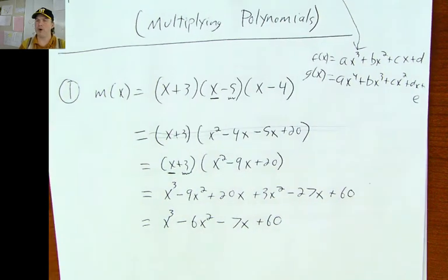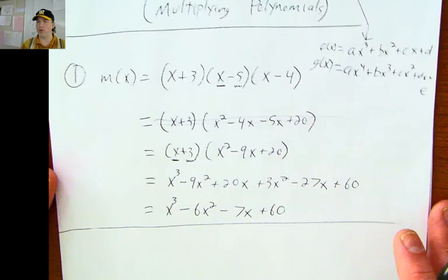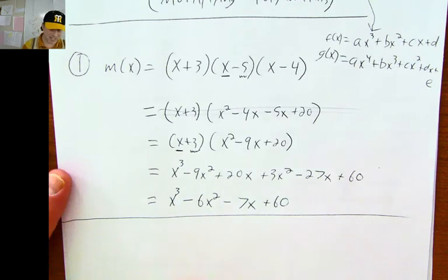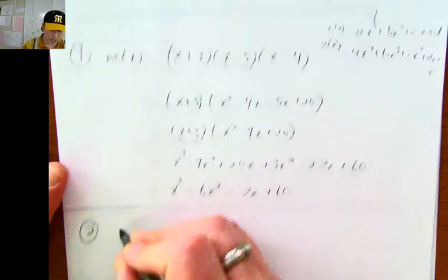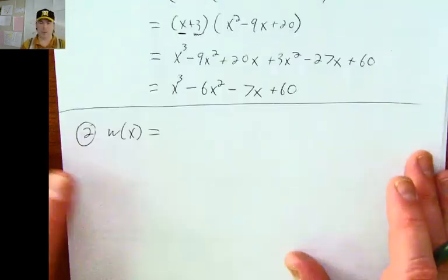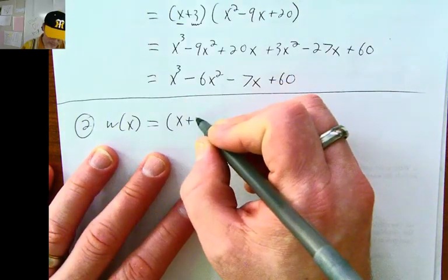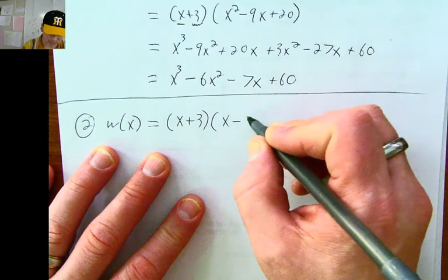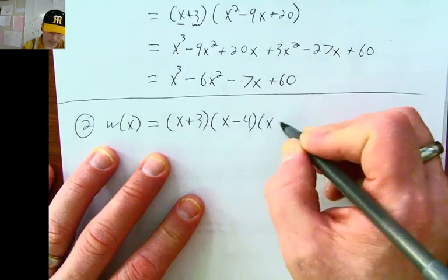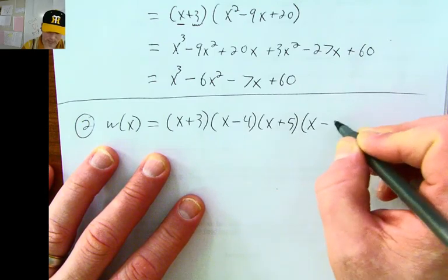That was example one. If you're already done and you get this, you can pause this video and try out the problems on the worksheet. If you'd like to see a second example, let's do one. Let's call it w of x after my grandpa Willard Williams, and let's go with a quartic: x plus three, times x minus four, times x plus five, times x minus two.